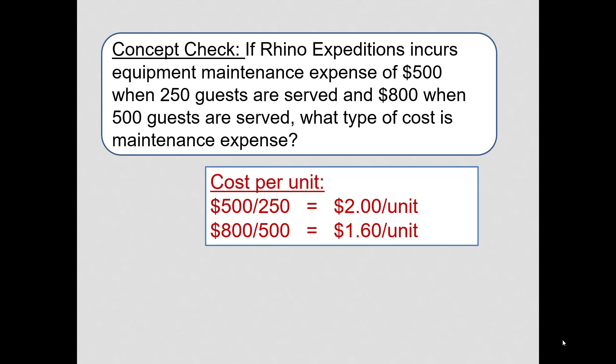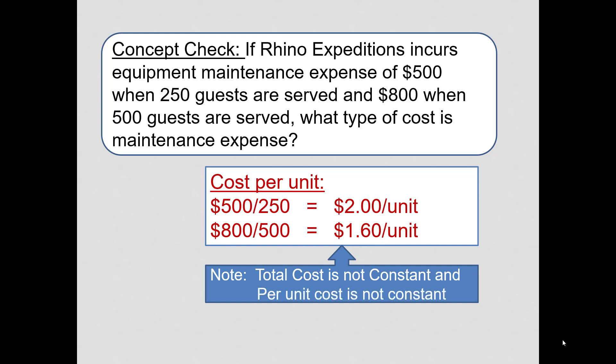So what we see is that the total cost is not constant. Therefore, it's not a fixed cost. And the per unit cost is not constant. Therefore, it is not a purely variable cost. Yes, the cost does vary, but it's not classified as a purely variable cost. It would be classified as a mixed cost.